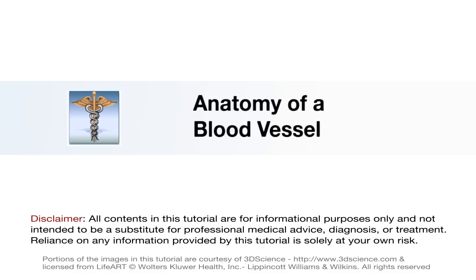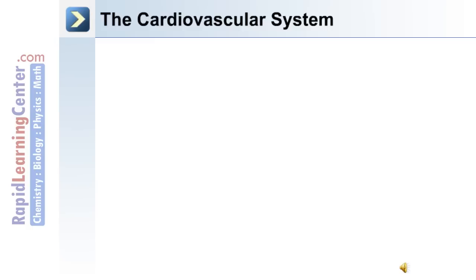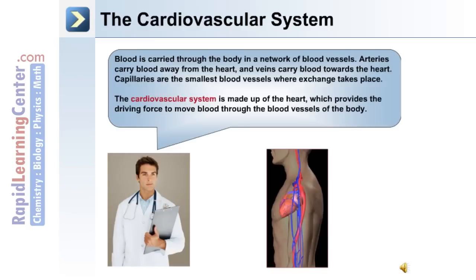Let's begin by discussing the anatomy of a blood vessel, including the different layers and the function of each layer. Blood is carried through the body in a network of blood vessels. Arteries carry blood away from the heart and veins carry blood towards the heart. The capillaries are the smallest blood vessels and this is where exchange between the blood and the extracellular fluid takes place.